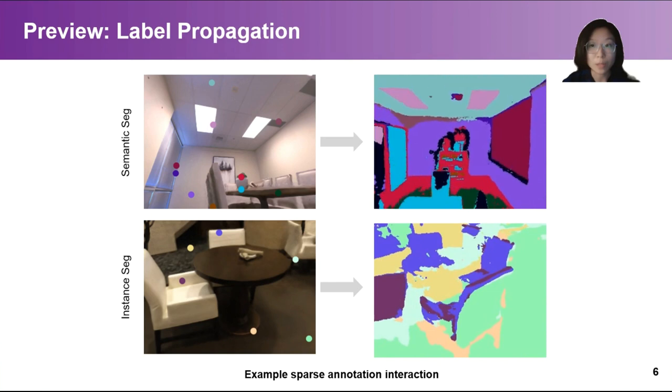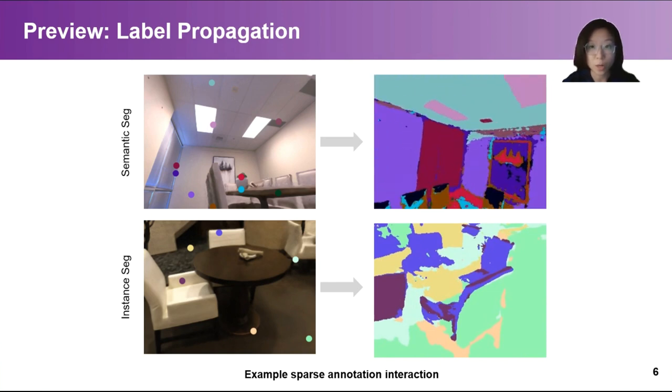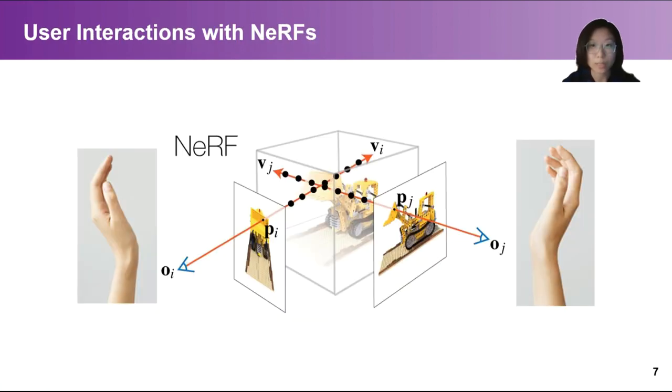We demonstrate the effectiveness of Jacobi NERF with state-of-the-art performance on sparse label propagation for both semantic and instance segmentation tasks. We illustrate the technical details in the following. In this work, we mainly focus on the NERF representation, which can flexibly link 2D and 3D information and support the desired user interaction in the image space.